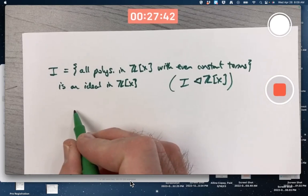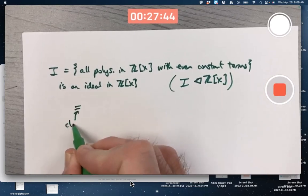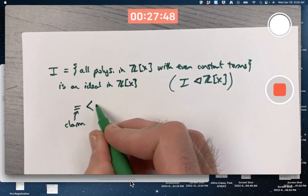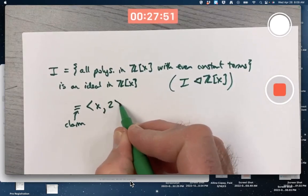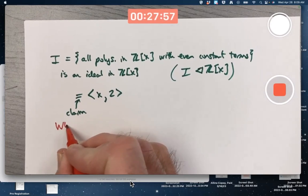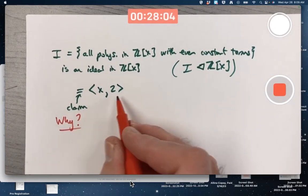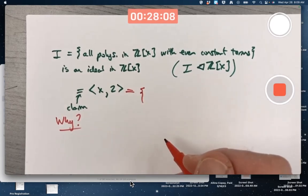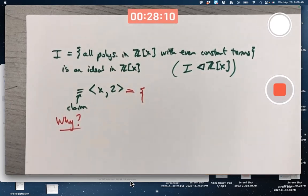Yeah, the claim is that this is the same as the ideal generated by the polynomial x and the constant polynomial 2. Why? Well, think about what the definition of this set is. It's the set of all quote-unquote linear combinations of x and 2, where the coefficients, they're not scalars but they are ring elements, they're from Z[x].